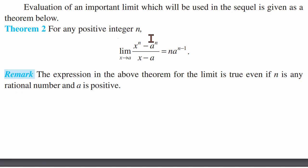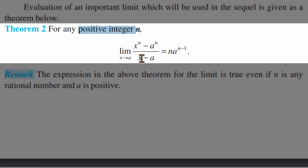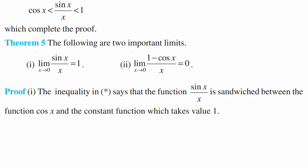One important limit theorem: limit x tends to a of (xⁿ − aⁿ) divided by (x − a) equals n multiplied by a to the power n minus 1. This is the limit value, and it holds for n a positive integer. This formula is very useful for problem solving.